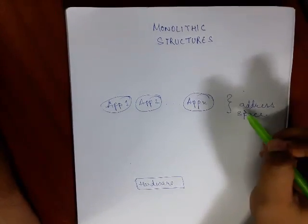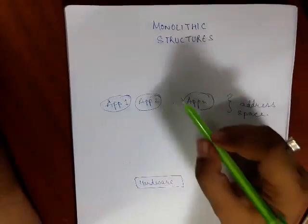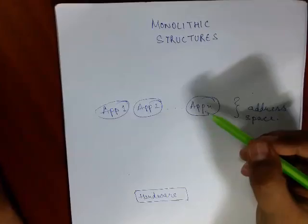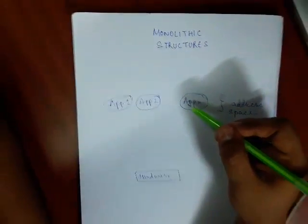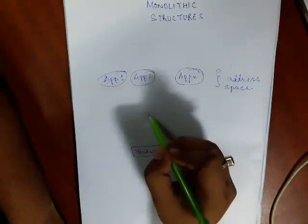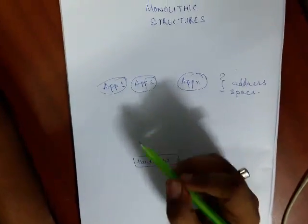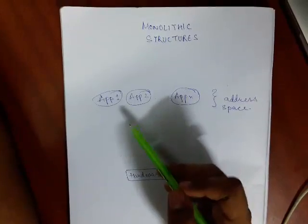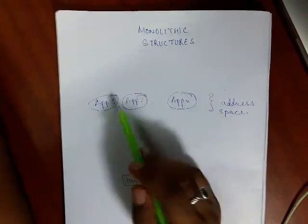Each application is protected from the other applications' address space because the hardware or the OS will ensure that the spaces occupied by one application is different from other applications. This is the first level of protection which is provided by this monolithic structure in operating system.